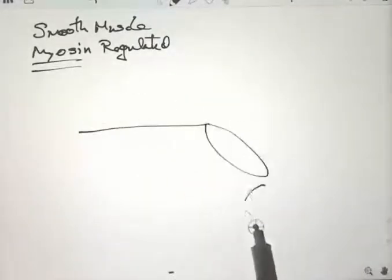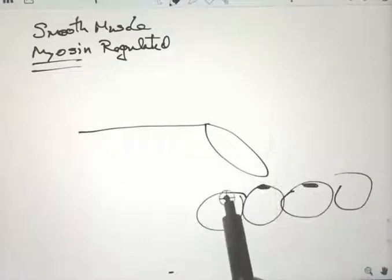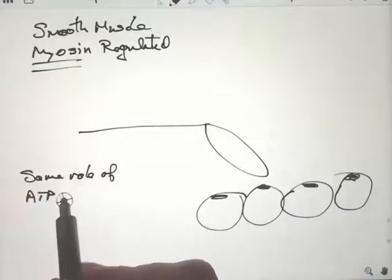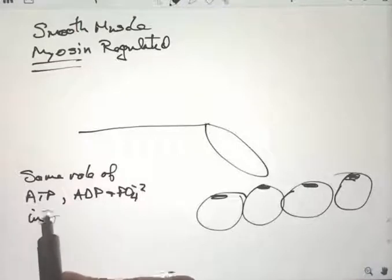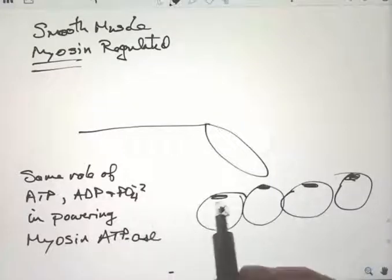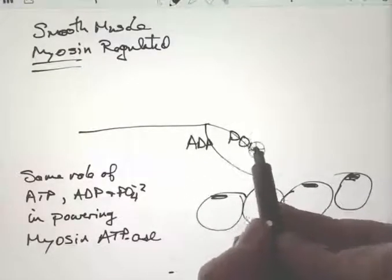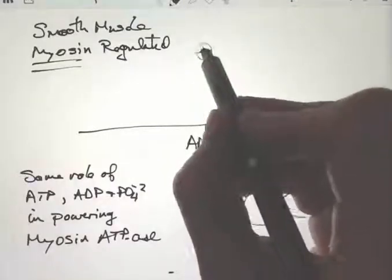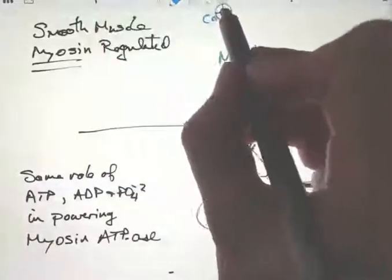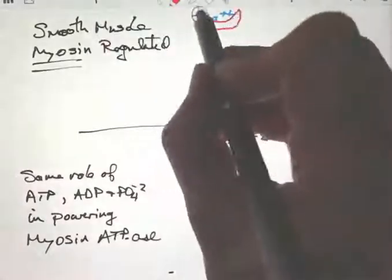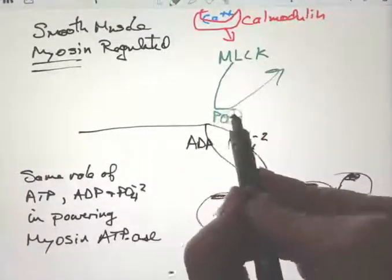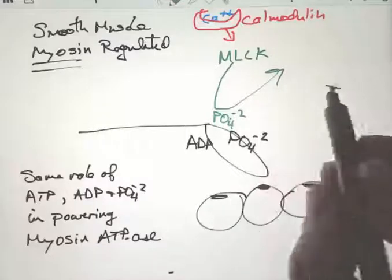Smooth muscle is often myosin-regulated. So here's a single myosin head and four actins. There's the same role for ATP, ADP, and phosphate in muscle contraction in powering the myosin ATPase, the myosin head, which uses ATP for movement, so it's an ATPase. ADP and phosphate, again, in the cocked position. But in the case of myosin-regulated muscle, we have to wait for something else. Myosin light chain kinase phosphorylates that myosin, specifically the myosin light chain. Calcium binds to calmodulin. That binds to MLCK. And the combination, that change in conformation, results in phosphorylation of the myosin head.